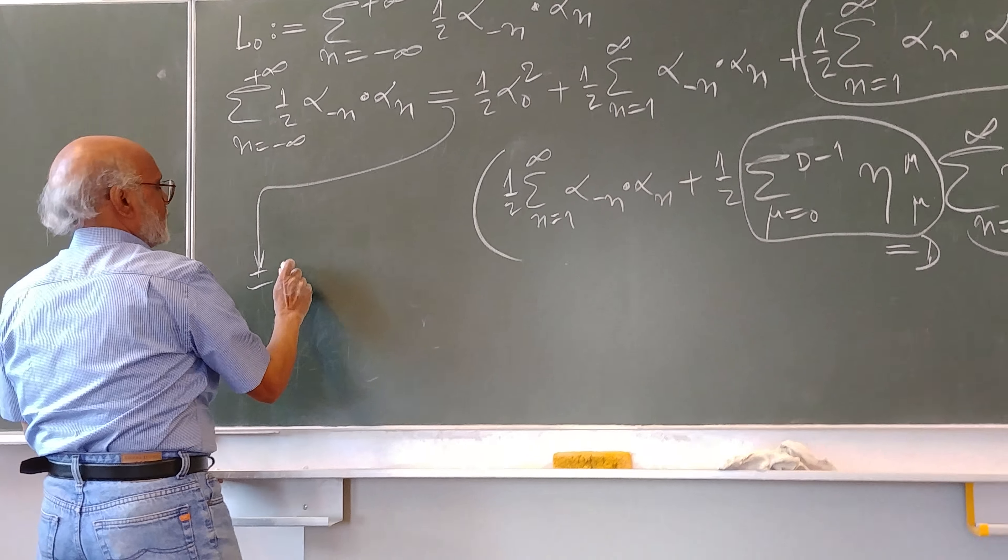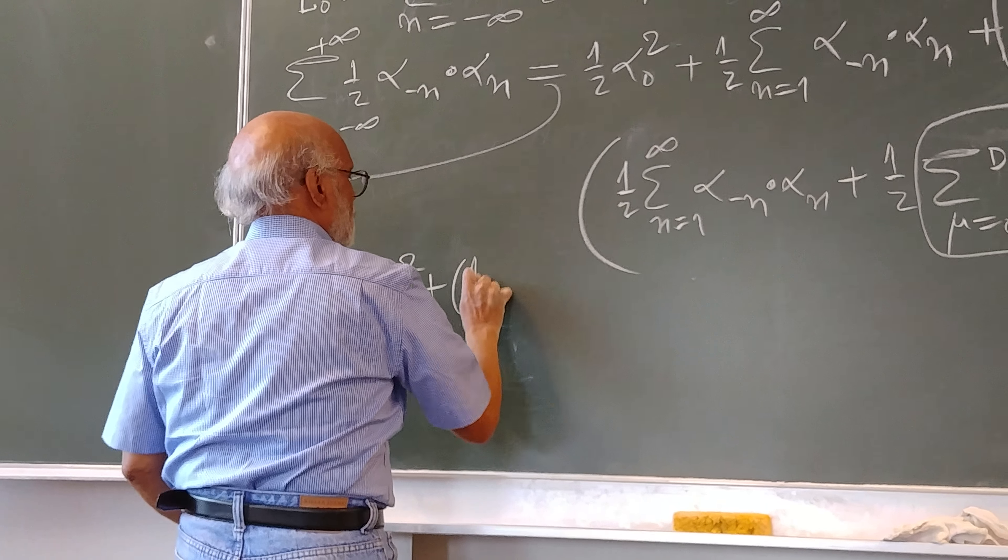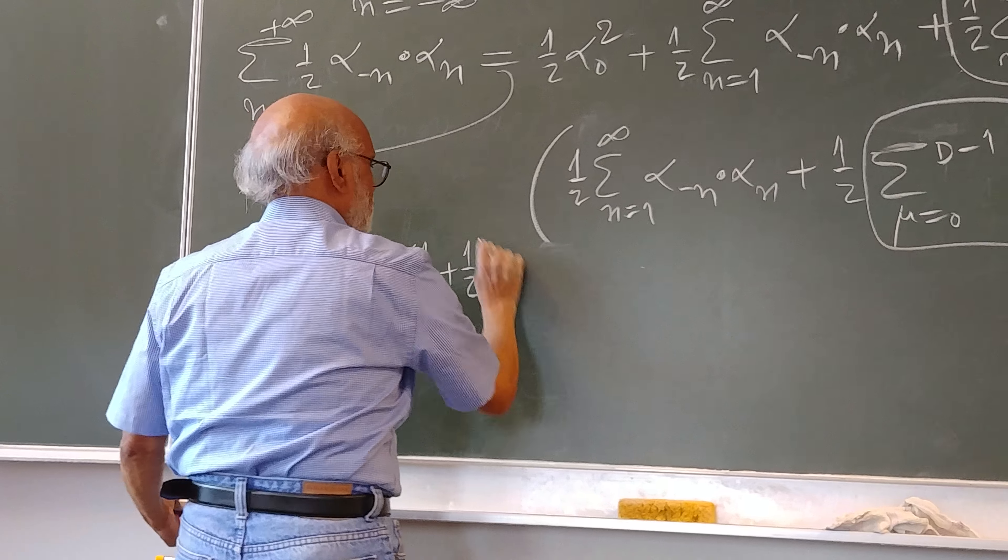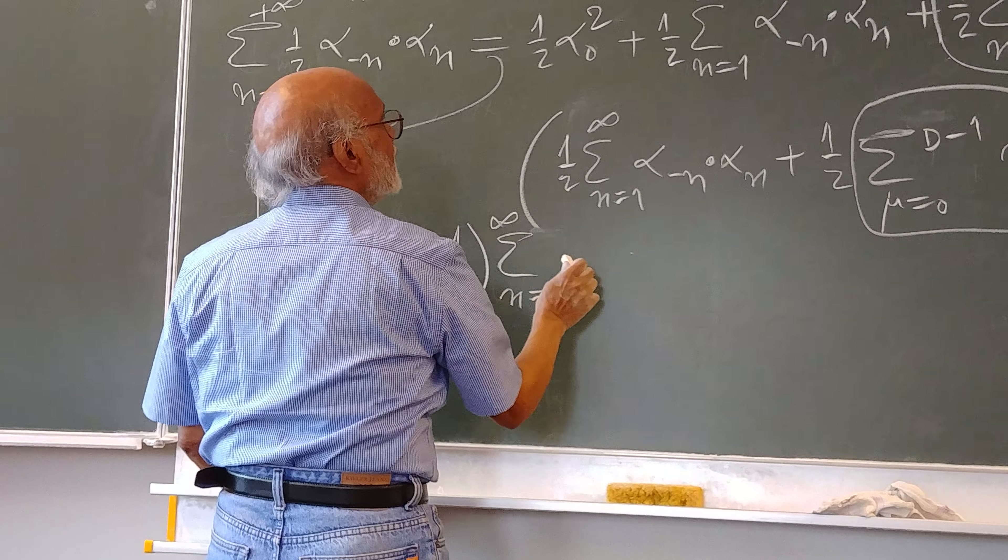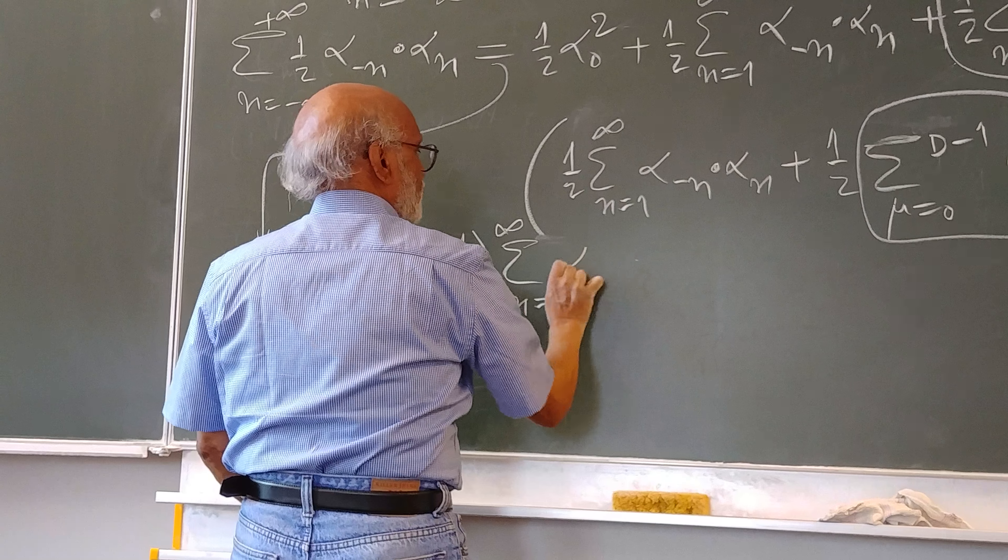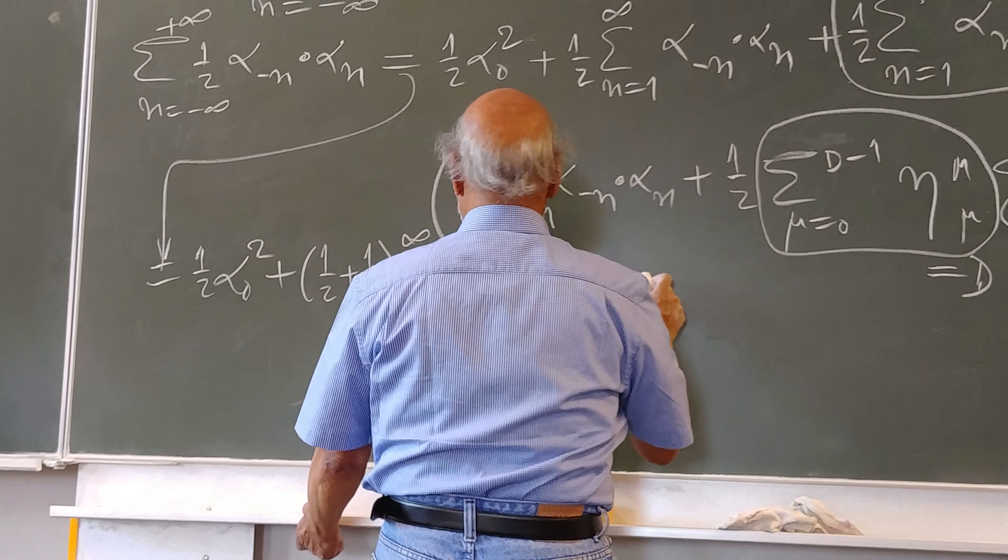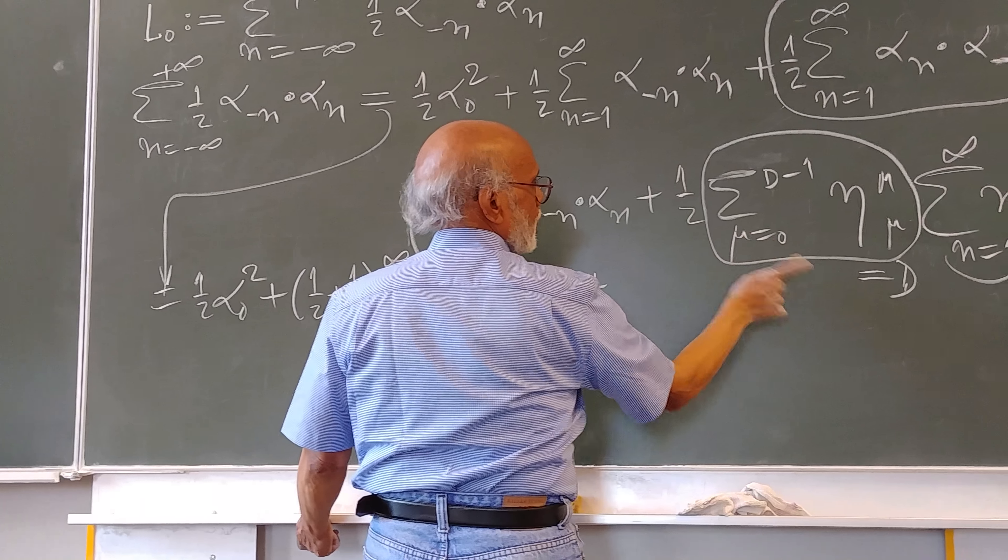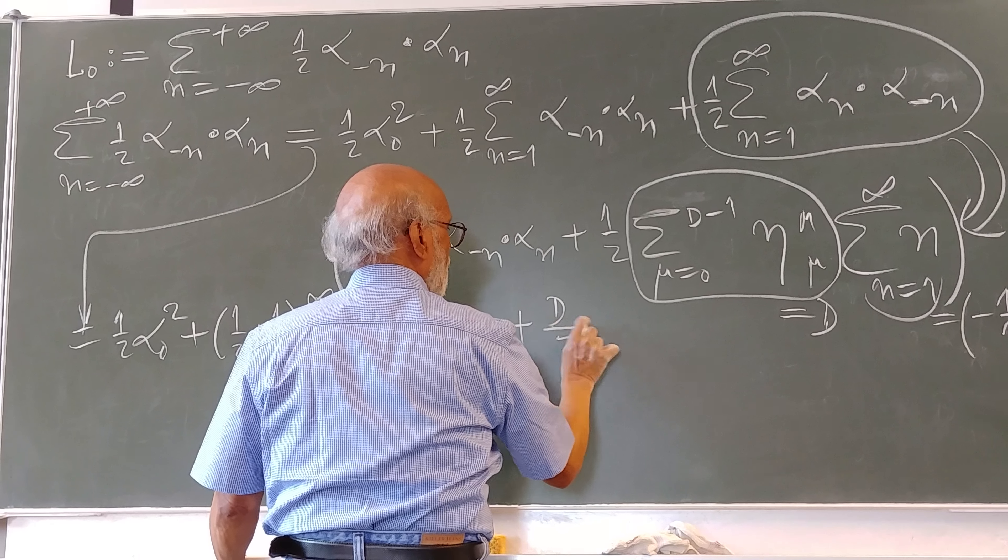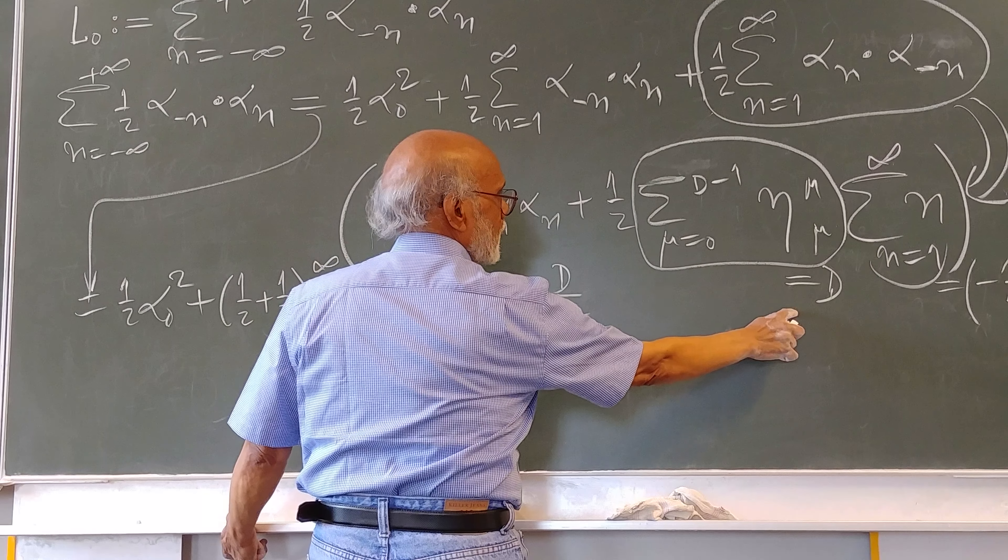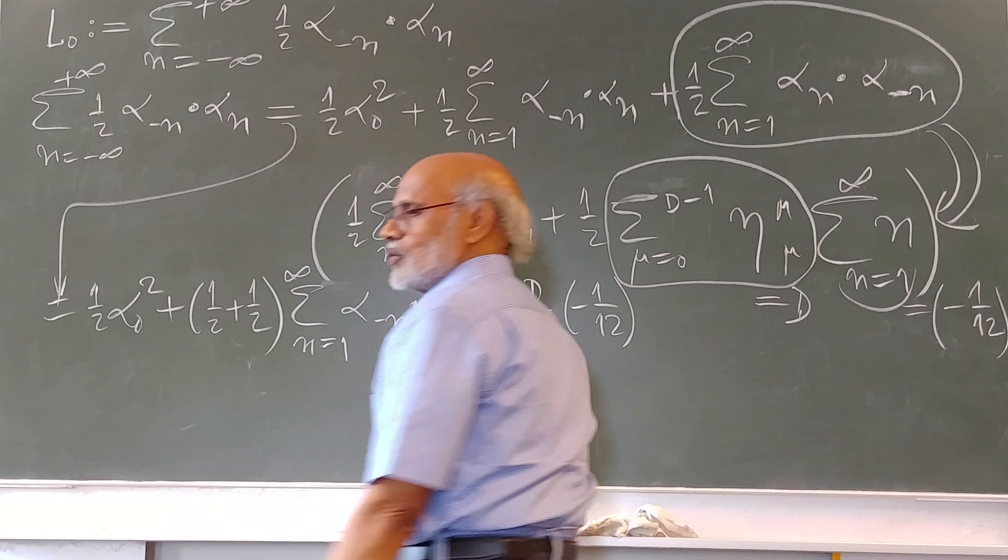one-half alpha zero square plus one-half plus one-half of n equal to one to infinity of alpha alpha minus n, alpha n plus, we would have d, one-half d by two, one-half into d into minus one by twelve.